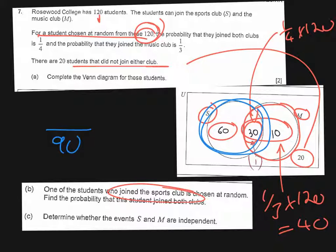We want to find the probability that the student joined both clubs. So that is the group in the intersection here. So we know that that's going to be 30 over 90 and we can simplify that down to a third.